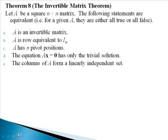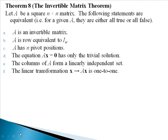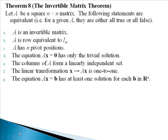E: the columns of A form a linearly independent set. F: the linear transformation from x to A times x is one-to-one. G: the equation Ax equals b has at least one solution for each vector b in Rn space. H: the columns of our matrix A span Rn.